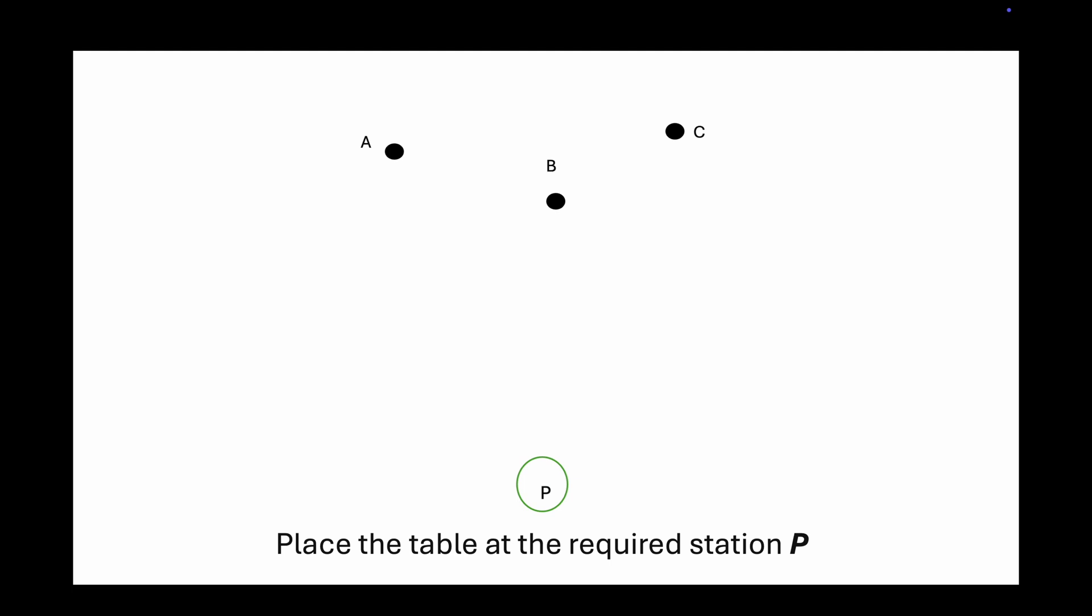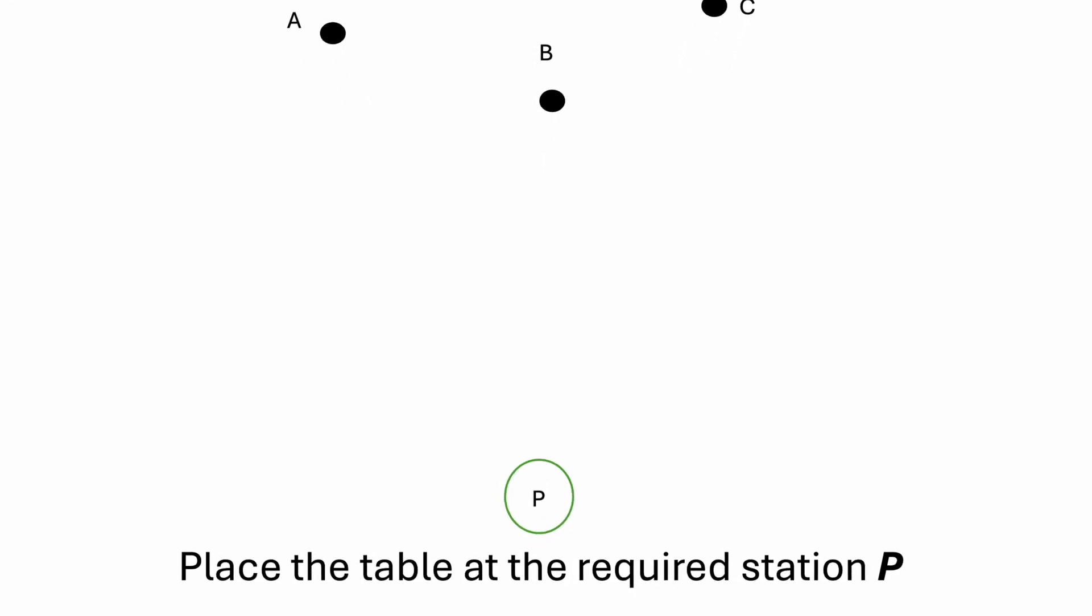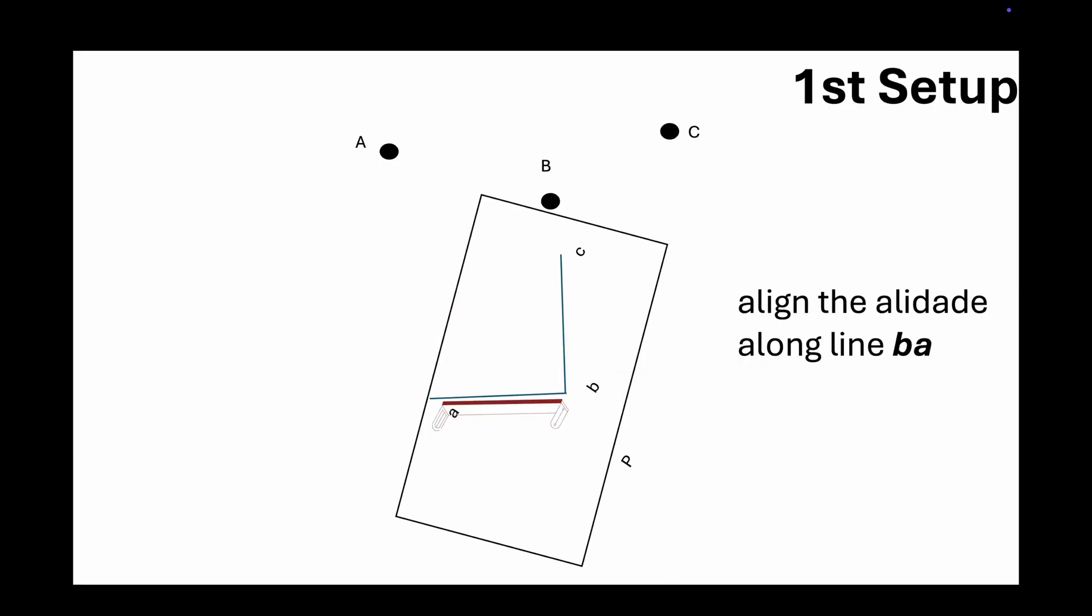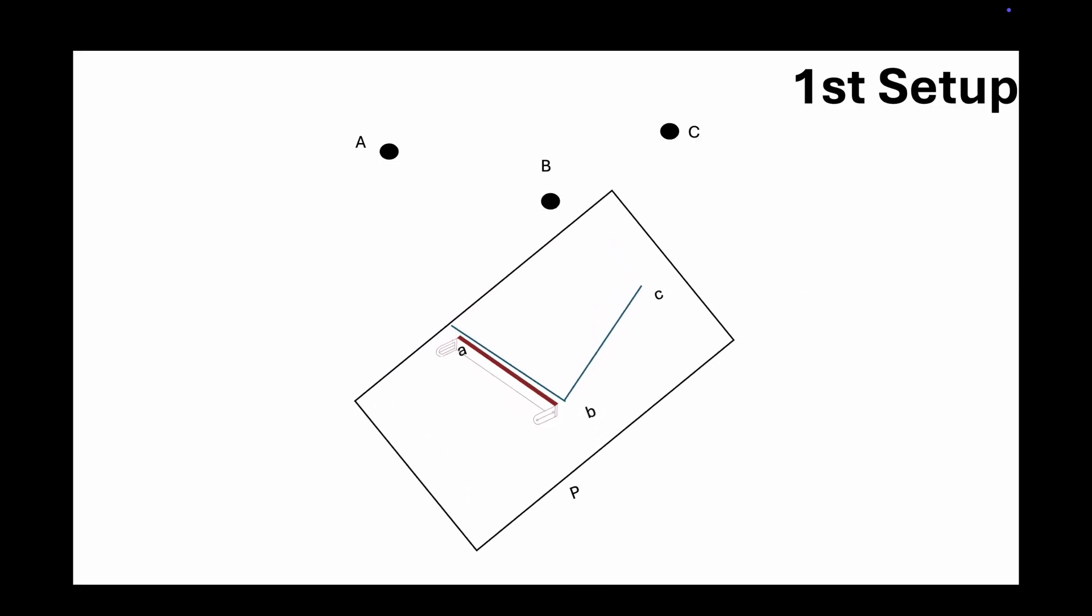To find the location of P, place the table at the required station P. Align the alidade along line BA. Rotate the table until station A is correctly aligned.